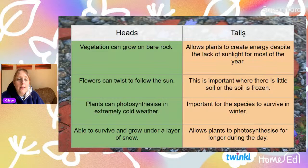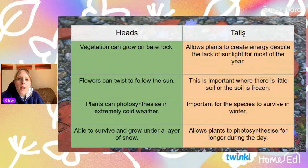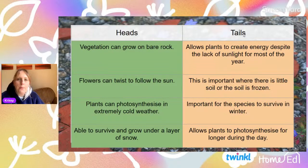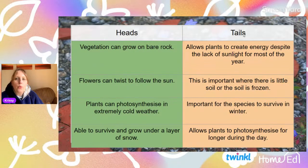Some plants can grow on bare rock. Some plants' flowers twist to follow the sun. The plants have developed so they can photosynthesize in extremely cold weather, making energy through photosynthesis even when it's really cold. And if there is a deluge of snow, they're able to survive and grow under a layer of snow. So look at the tails — which one matches? Vegetation can grow on bare rock, the flowers can twist to follow the sun — look at the tails, which ones match? You've got another 30 seconds. Off you go.